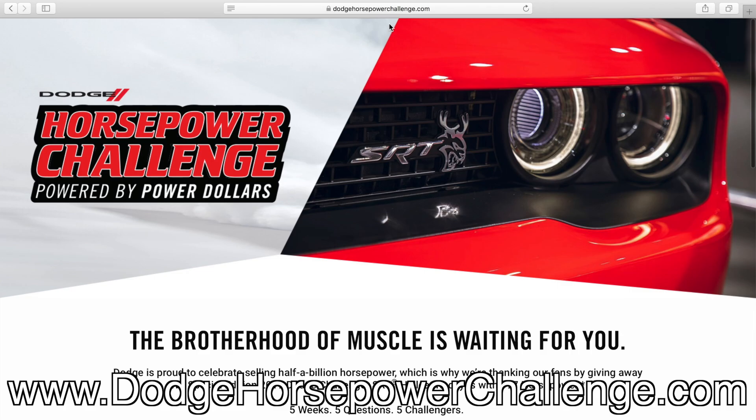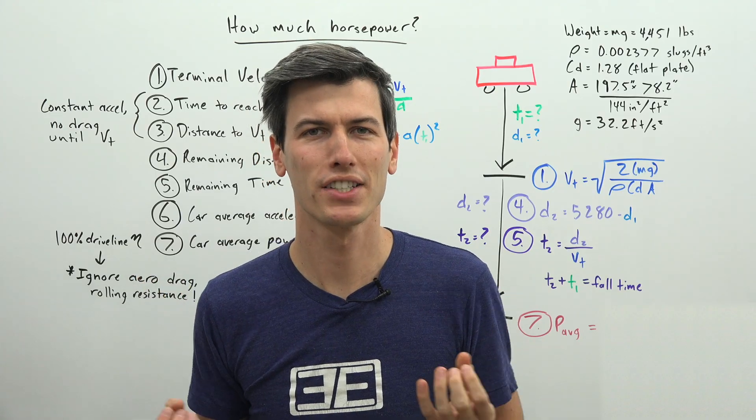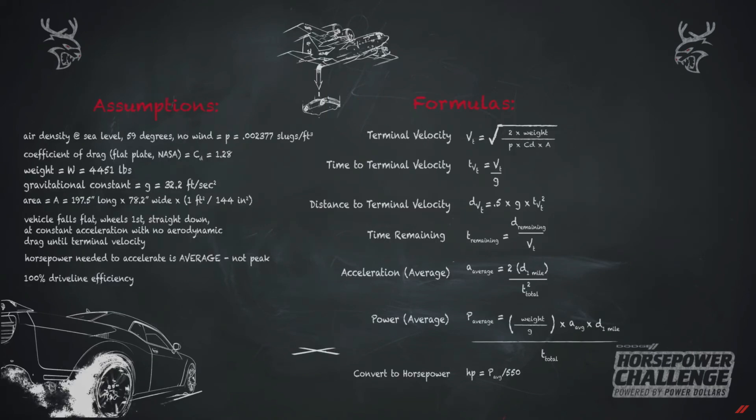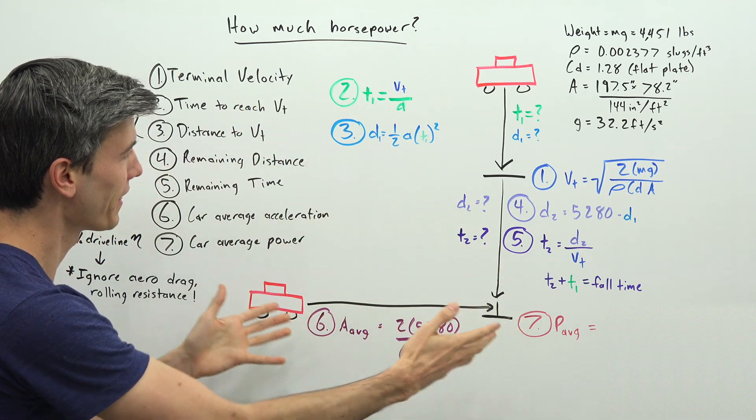Go to DodgeHorsepowerChallenge.com. Now this week's question is how much horsepower would a red-eye need in order to travel one mile in less time than it takes a red-eye to fall one mile from the sky? So there's a lot of math here to do,